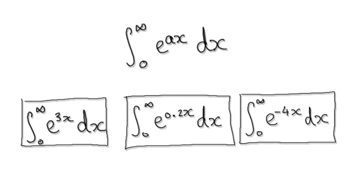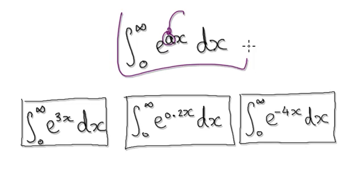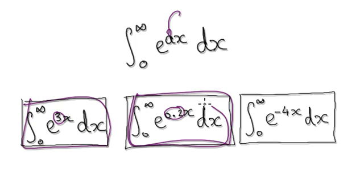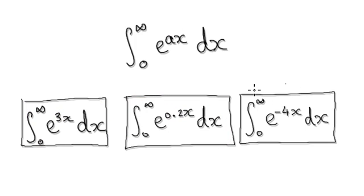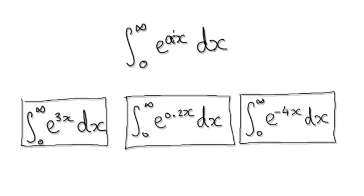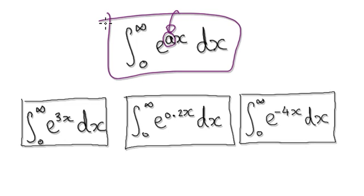In this video, we're going to try and find values of a for which this whole thing here will converge. For example, suppose a is 3 — will this thing converge or will it diverge? Suppose a is 0.2 — will this converge or diverge? Or when a is negative 4, will this converge or diverge? So we're going to find values of a that allow this whole thing to converge.